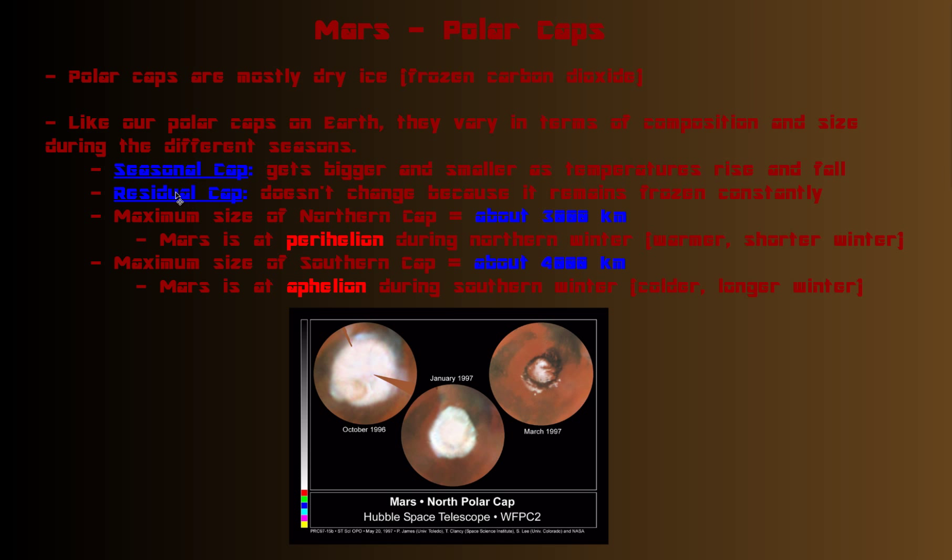The residual cap, meaning the cap that stays there throughout the year, doesn't change because it remains frozen constantly. Those are pretty much made up of mostly water ice, which stays as a solid ice form with typical Martian temperatures.